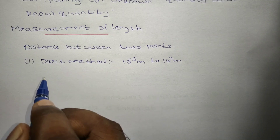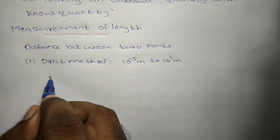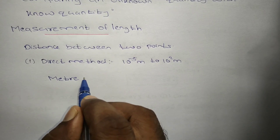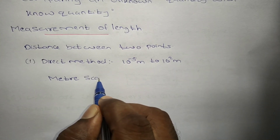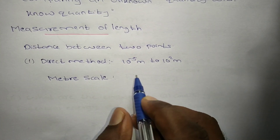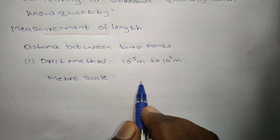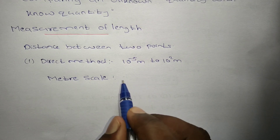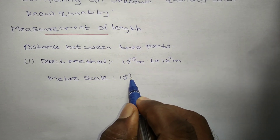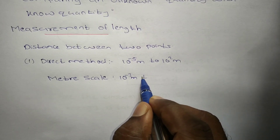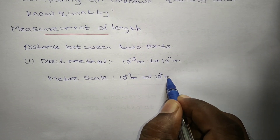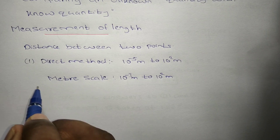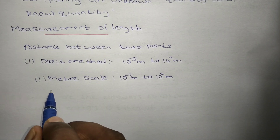The devices used in the direct method include the meter scale. The least count of the meter scale is 1 millimeter, that is 10 to the power minus 3 meters. So from 10 to the power minus 3 meters up to 10 to the power 2 meters can be measured using a meter scale.